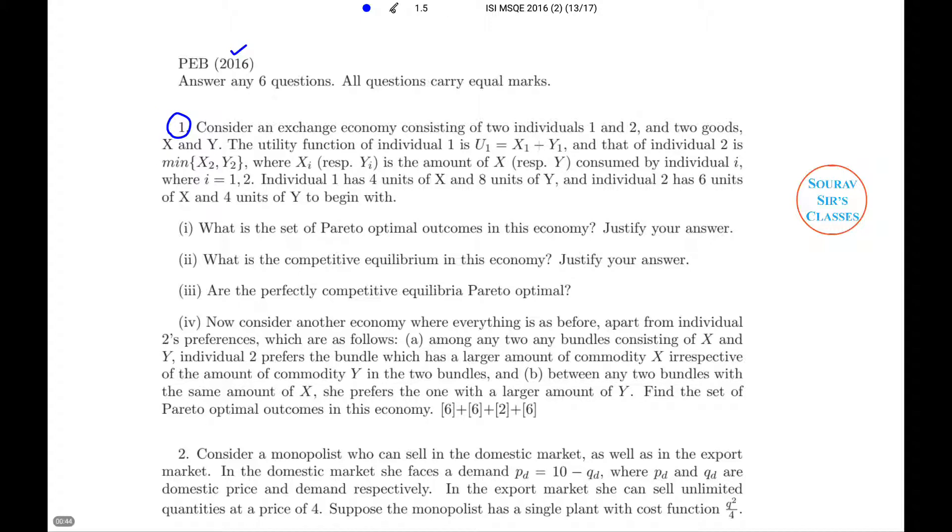The question reads as: consider an exchange economy consisting of 2 individuals 1 and 2, and 2 goods named as X and Y. The utility function for individual 1 is given and that for individual 2 is given. XI is the amount of X consumed by individual I and same goes for YI. Individual 1 has 4 units of X and 8 units of Y, while a different combination is given for individual 2. The first part of the question asks us what is the set of Pareto-optimal outcomes in this economy and we need to justify our answer. Let's get started.